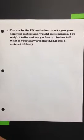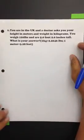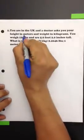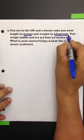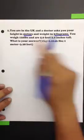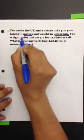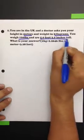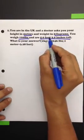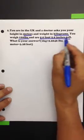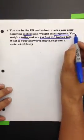Okay, let's do problem number one on the test, chapter 8, 9, and 10. You're in the UK and a doctor asks you your height in meters and weight in kilograms. So we're looking for weight and height. You weigh 120 pounds and are 5 foot 2 inches tall. What's your answer? So let's go from kilograms to pounds.